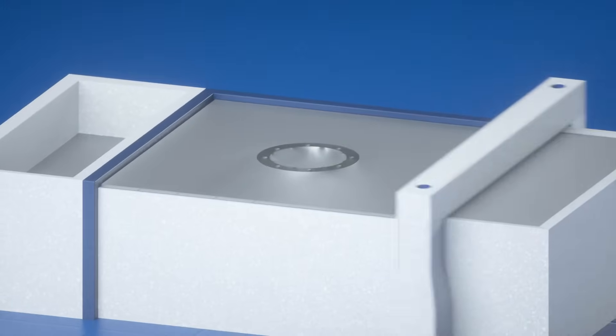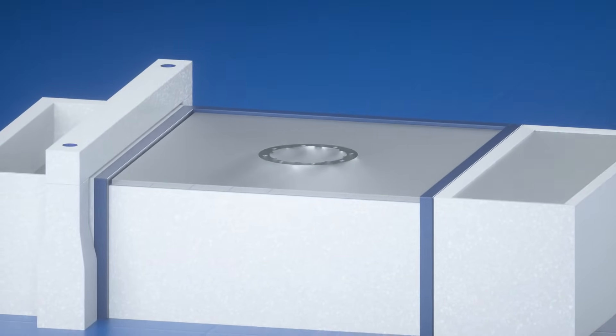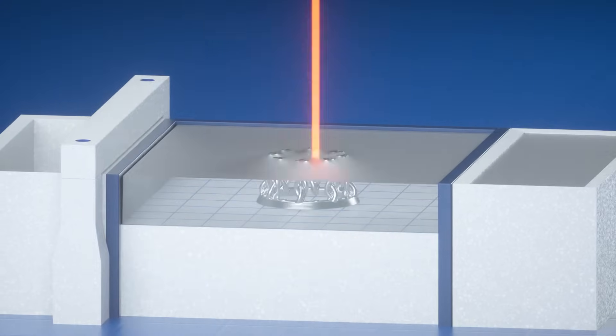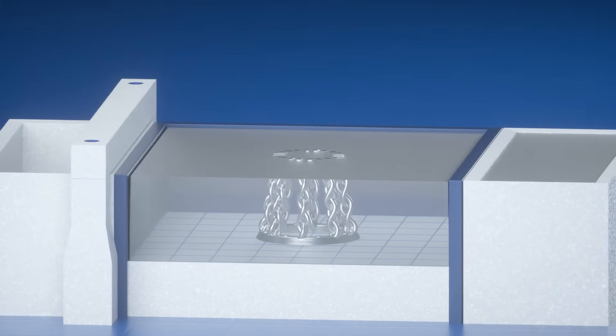The platform is lowered and another layer of metal powder is spread across the platform. The layering and melting process is then repeated until the part is complete.